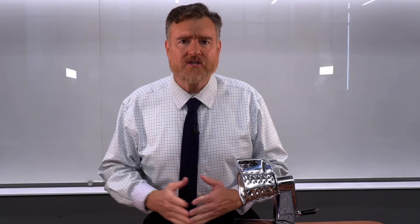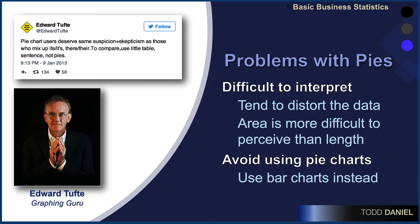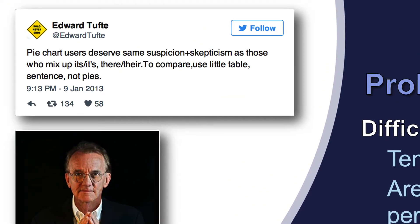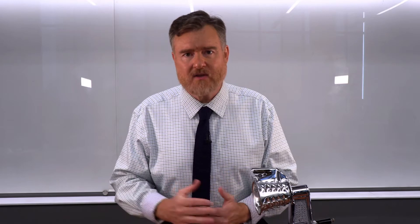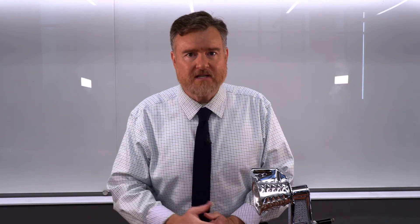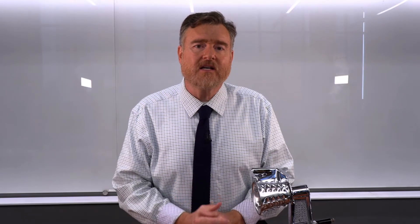The fundamental problem of pie charts is that they distort the data. Pie charts are difficult to interpret because area is more difficult to perceive than length — the slice of the pie is more difficult to interpret than the length of a line. So the obvious solution is to use a bar chart instead. Edward Tufte says that pie chart users deserve suspicion or skepticism — if you're going to make comparisons, use a little table or put it into a sentence, but don't use a pie chart.